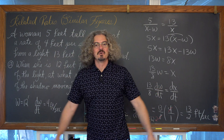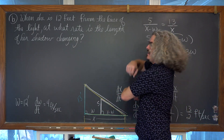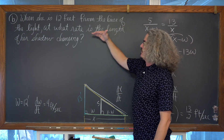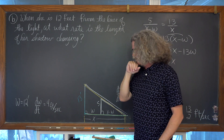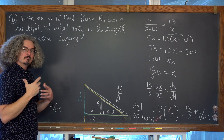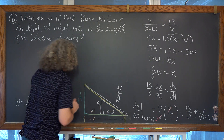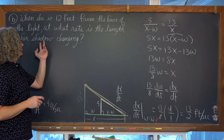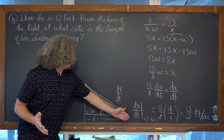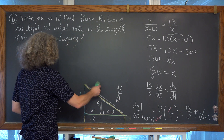Now for part B: when she's 12 feet from the base of the light, at what rate is the length of her shadow changing? We're not concerned about how quickly the tip of her shadow is moving relative to the ground or the light, but actually the rate of change for the length of the shadow itself. What variable or expression in our diagram describes the length of the shadow?